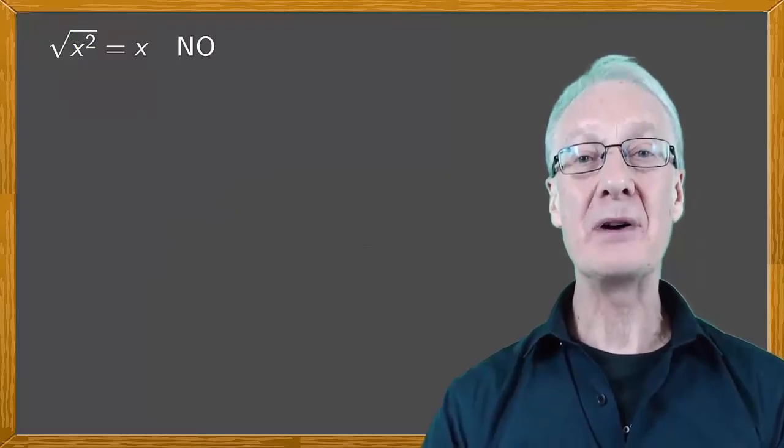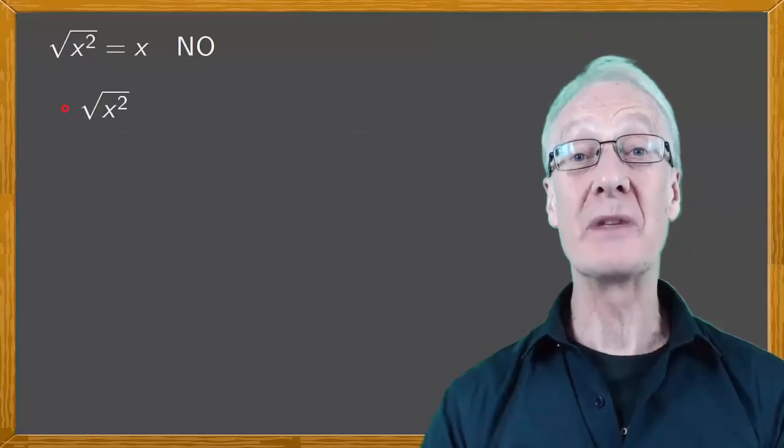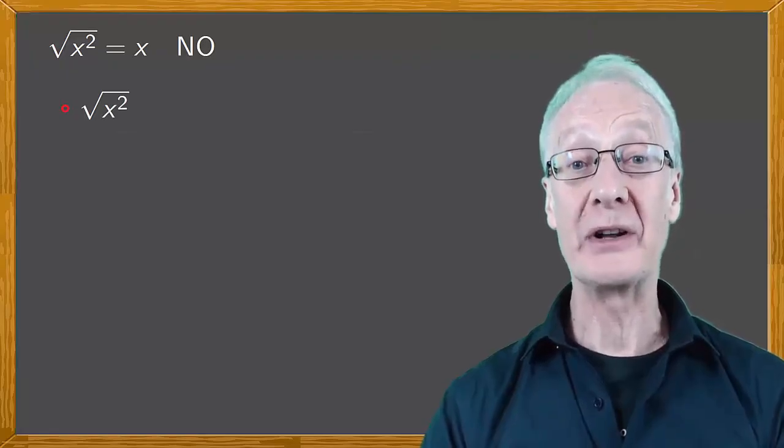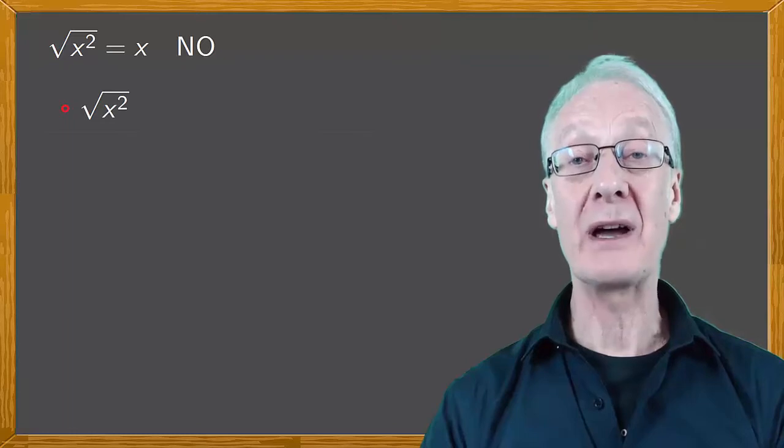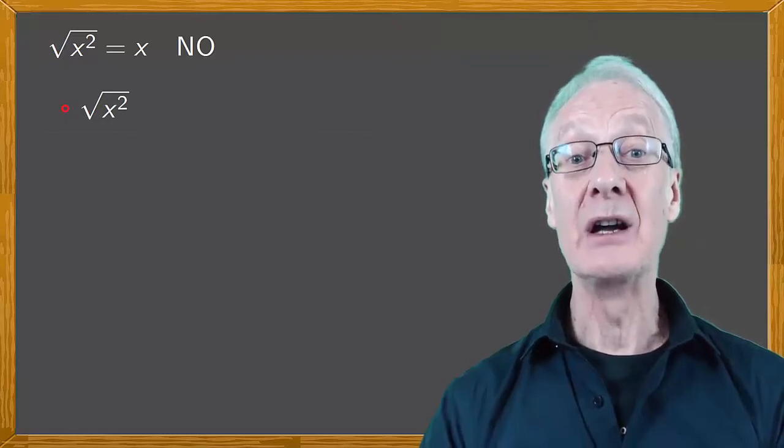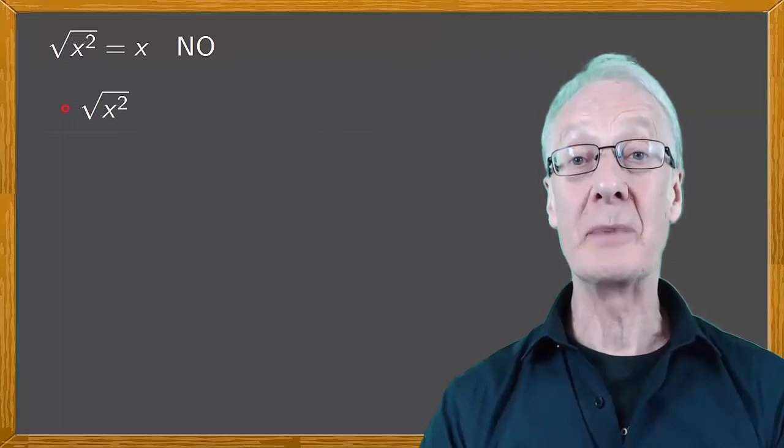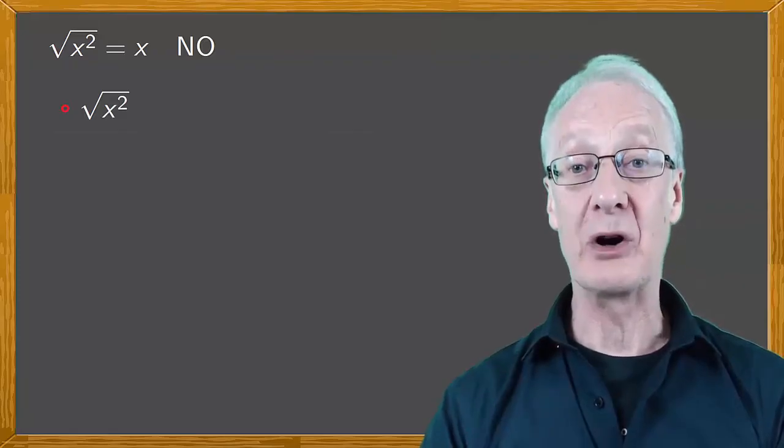The key fact to remember is that the square root of something is always positive. So we shouldn't say that the square root of x squared is x. Instead, because the result must always be positive, we should refer to the absolute value of x.